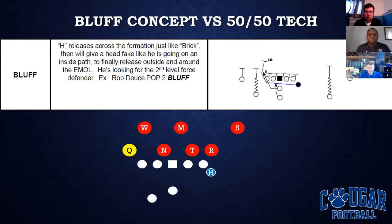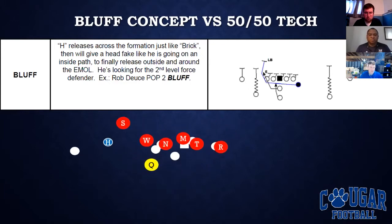One coaching point we want for the H-back: we want a head fake on the DN. We want that block to look as much as possible just like a kick-out block. So go attack the DN, give him a little head fake, a nod, and then avoid him and go on to the next level.